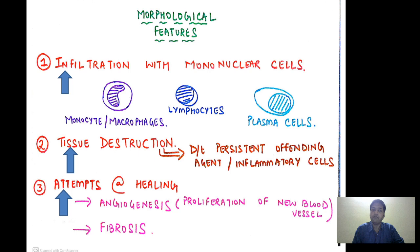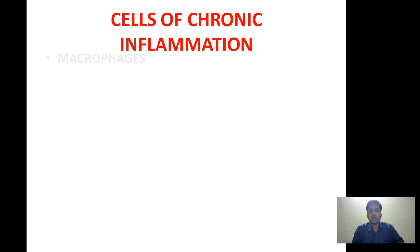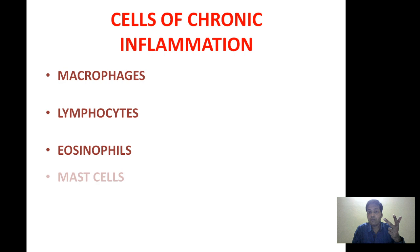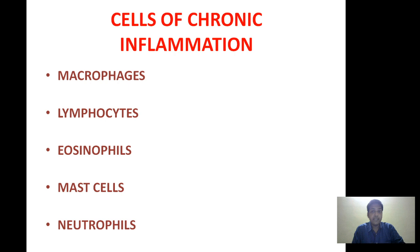Moving ahead, what are the cells of chronic inflammation? We are having the macrophages, lymphocytes, eosinophils, mast cells, and lastly — you will be surprised — neutrophils. Yes, the neutrophil, which is the most important cell in acute inflammation, can also form a part of chronic inflammation in acute-on-chronic inflammation.